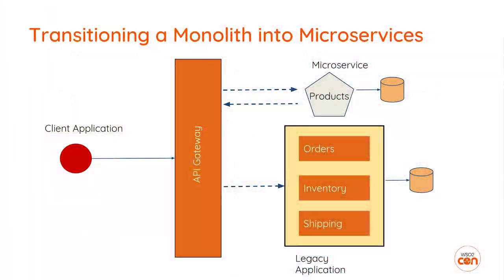Having an API gateway also becomes important when transitioning from a monolith to a microservice architecture. As things change behind the scenes, exposing that change to your client application isn't feasible. One approach is to first expose your entire application through a uniformly defined API gateway layer, so your client only talks to the gateway, and then you slowly decompose your monolith into microservices — for example, first taking the product function out as a separate microservice, with different URLs and access patterns that the client never sees.